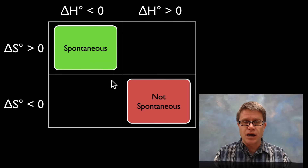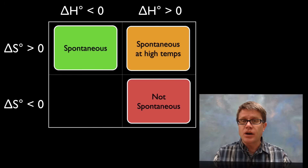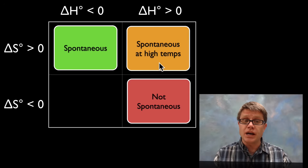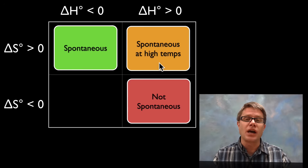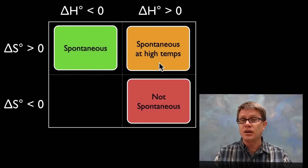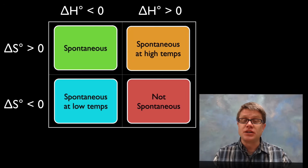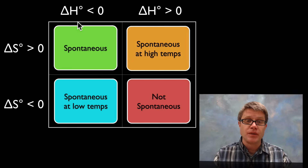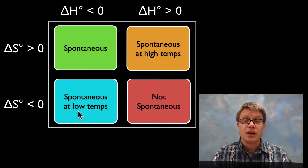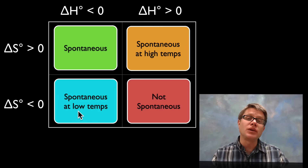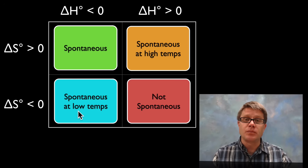So if we have an increase in enthalpy — an endothermic reaction — and an increase in entropy, that will be spontaneous as long as we have a high enough temperature. Likewise, if we have a decrease in enthalpy — an exothermic reaction — and a decrease in entropy, that's going to be spontaneous only at low temperatures.